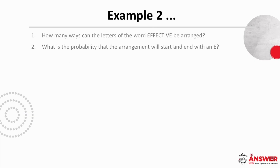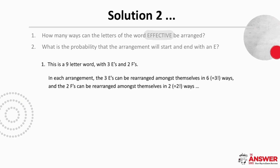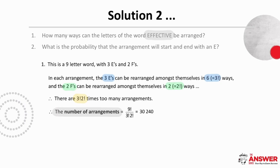What if more than one letter is repeated? Let's see what happens with the word 'effective', which also includes a probability question. 'Effective' is a nine-letter word with three E's and two F's. The three E's can be arranged three factorial ways amongst themselves and the F's two factorial ways, meaning there are three factorial times two factorial times too many arrangements. The number of arrangements is nine factorial divided by three factorial times two factorial, which is 30,240.